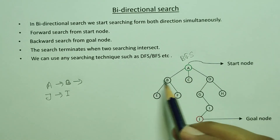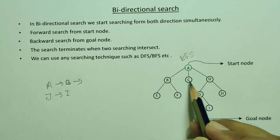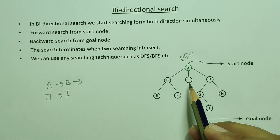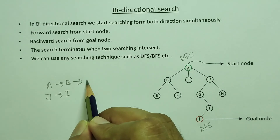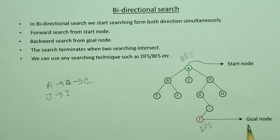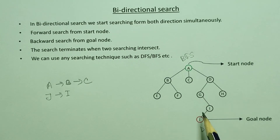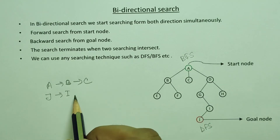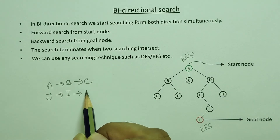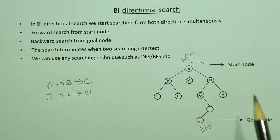In order to get a level-wise visit, BFS is applied from the start node side. Similarly, from the goal node side, the backward direction covers the remaining nodes level by level.